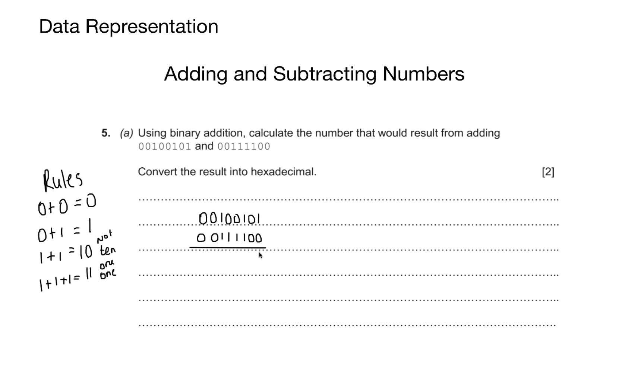All I need to do is remember my rules. I take 1 and 0, that gives me 1. I take 0 and 0, that gives me 0. I take 1 and 1, and I carry the 1. I take 0 and 1, and because I've got a carry bit, that gives me 0 and I carry the 1.